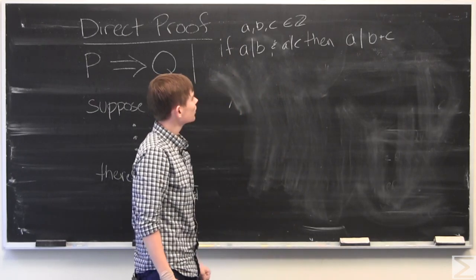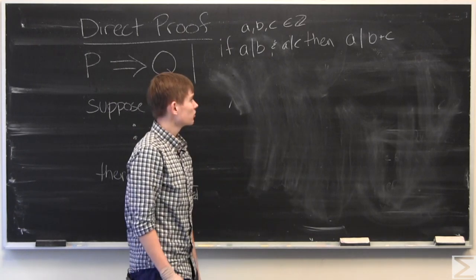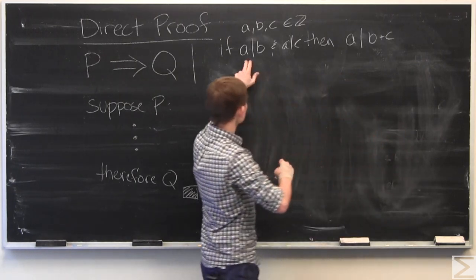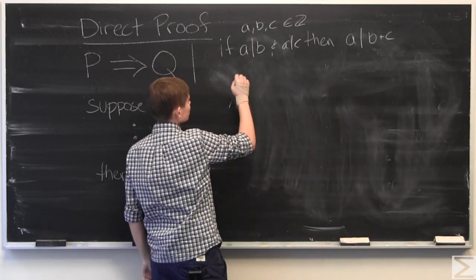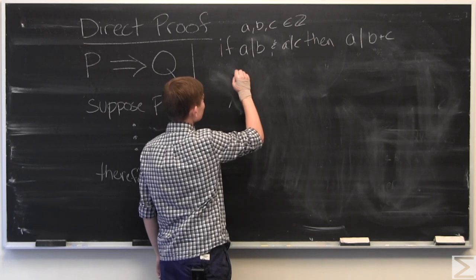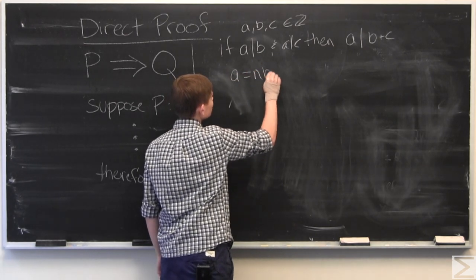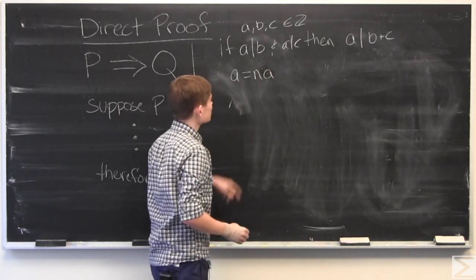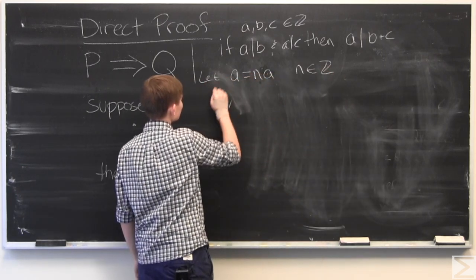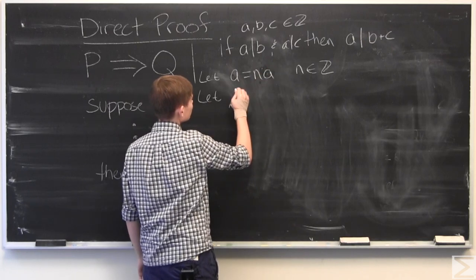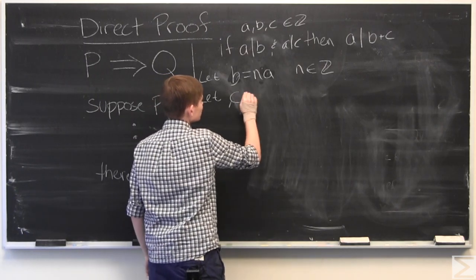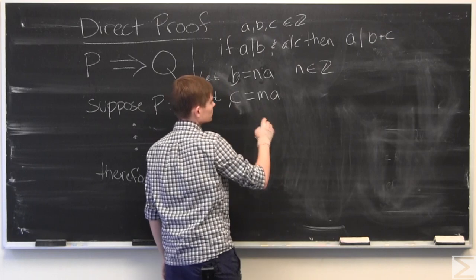And to do this we will use a definition for what it means to divide another number. And so if A divides B, this means that B is a multiple of A. So we will define B to be N times A, where N is an integer. And we will define C to be also a multiple of A, M times A where M is an integer.